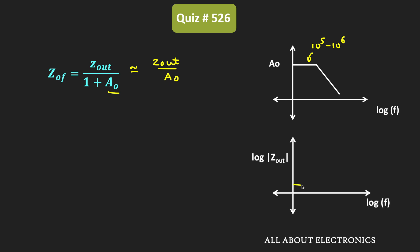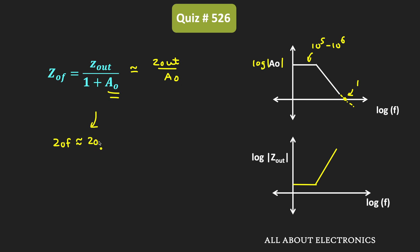On the logarithmic scale, up to a certain frequency the gain remains constant, and after that as the frequency increases the gain will reduce. As per this expression, the output impedance will increase accordingly. Whenever this curve crosses the horizontal axis, the gain of the op-amp will be equal to 1. If you go beyond that, the value of the gain will be much less than 1. So after this intersection point, A0 will be very much less than 1, and in that case we can say that Zof is approximately equal to Zout. Beyond that frequency, Zof will remain the same.